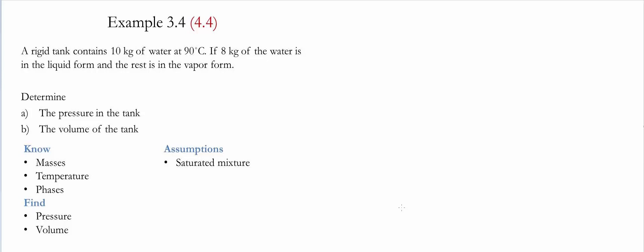Example 3.4 or 4.4 for the given textbooks. For details please see the description below. In this example there is a rigid tank that contains 10 kilograms of water at 90 celsius. Eight of those 10 kilograms is water in the liquid form and the rest is in the vapor form.